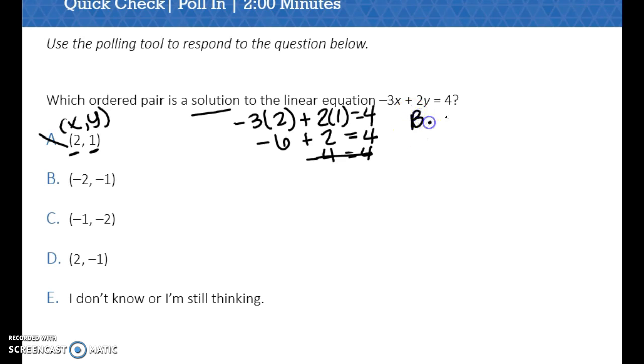Let's go ahead and try b. So now I have negative 3 times negative 2. Remember, I'm getting that x value from right here. So I'm just substituting that x value in. And then I'm adding 2 times my y value, which is negative 1. So I'm just substituting in.